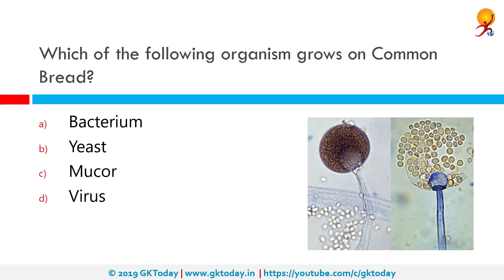Which organism grows on common bread? The correct answer is mucor. Mucor is a microbial genus of approximately 40 species of molds, commonly found in soil, digestive systems, plant surfaces, some cheeses, rotting vegetable matter, and as residue in the biosorption process.